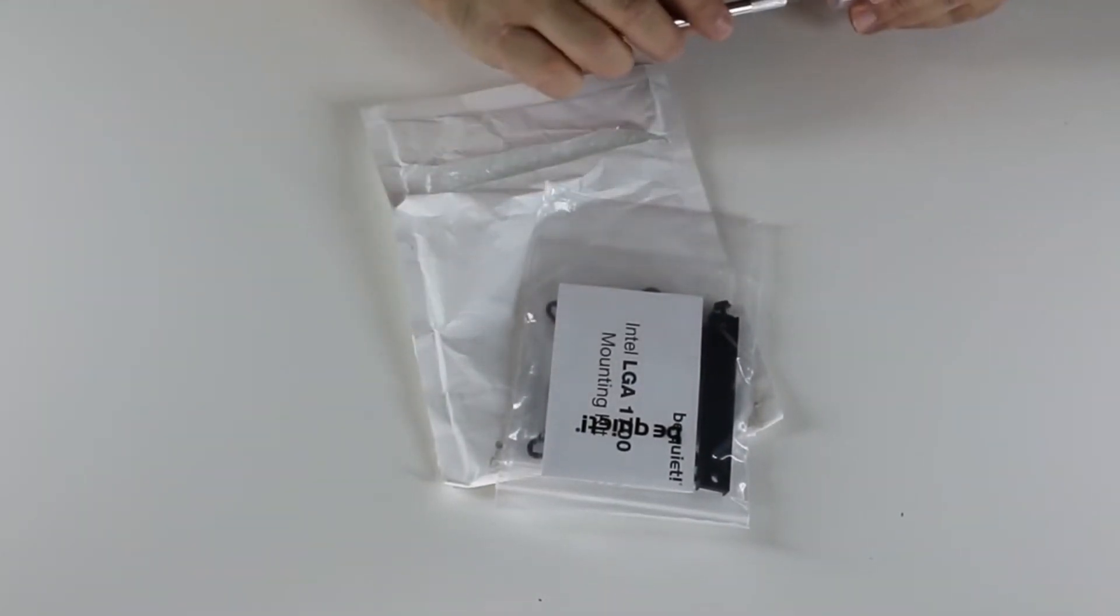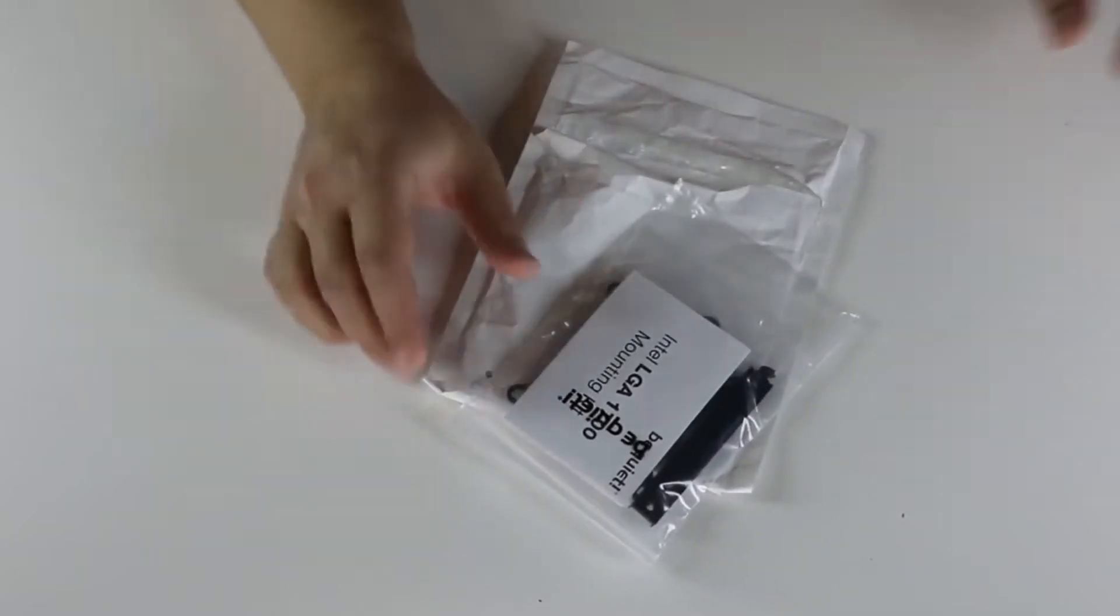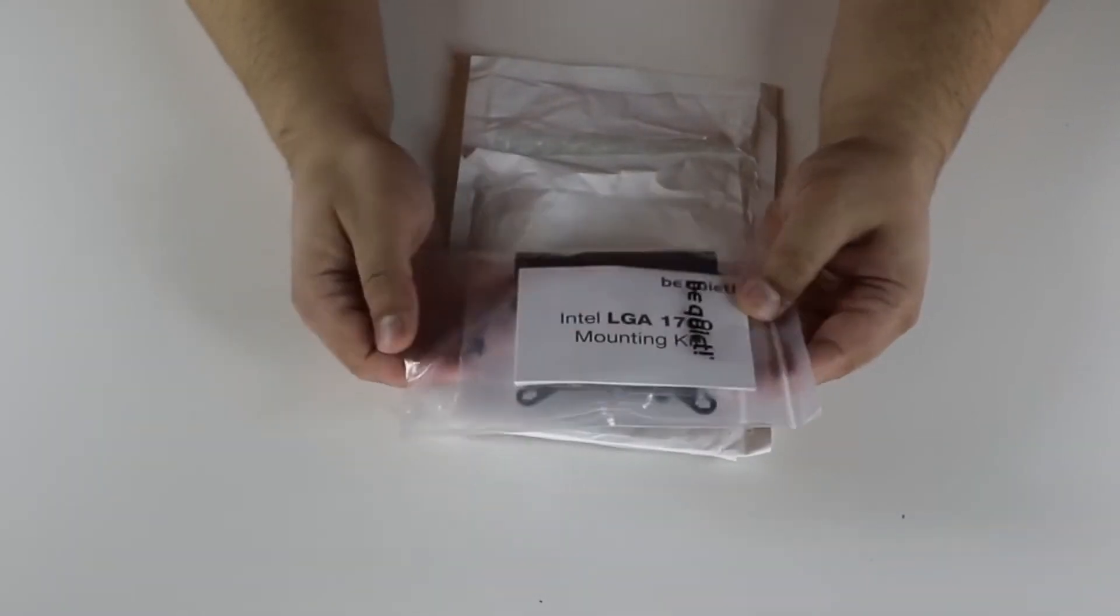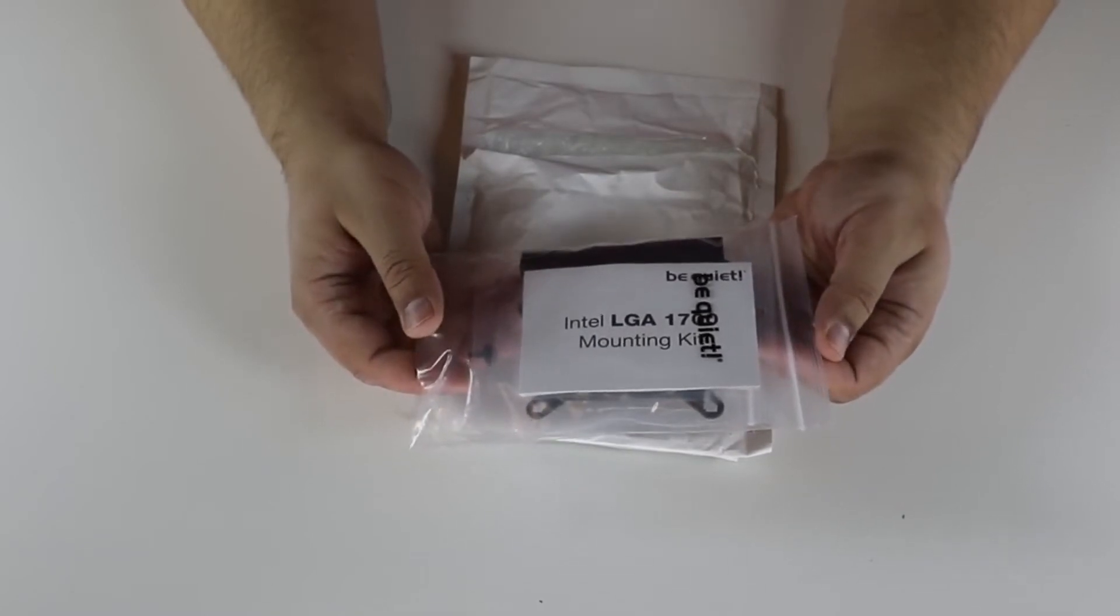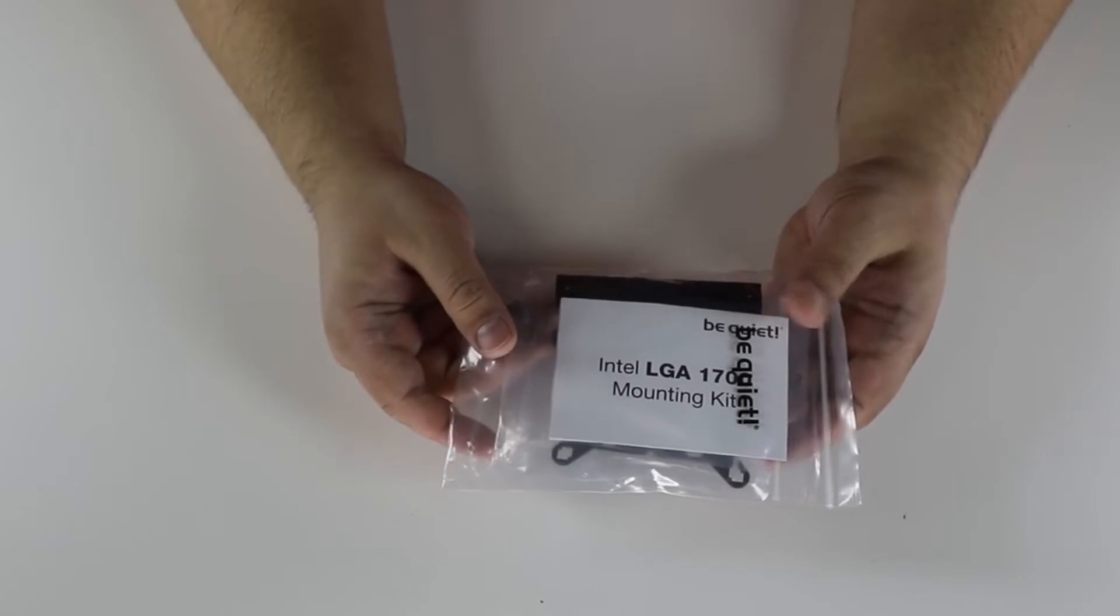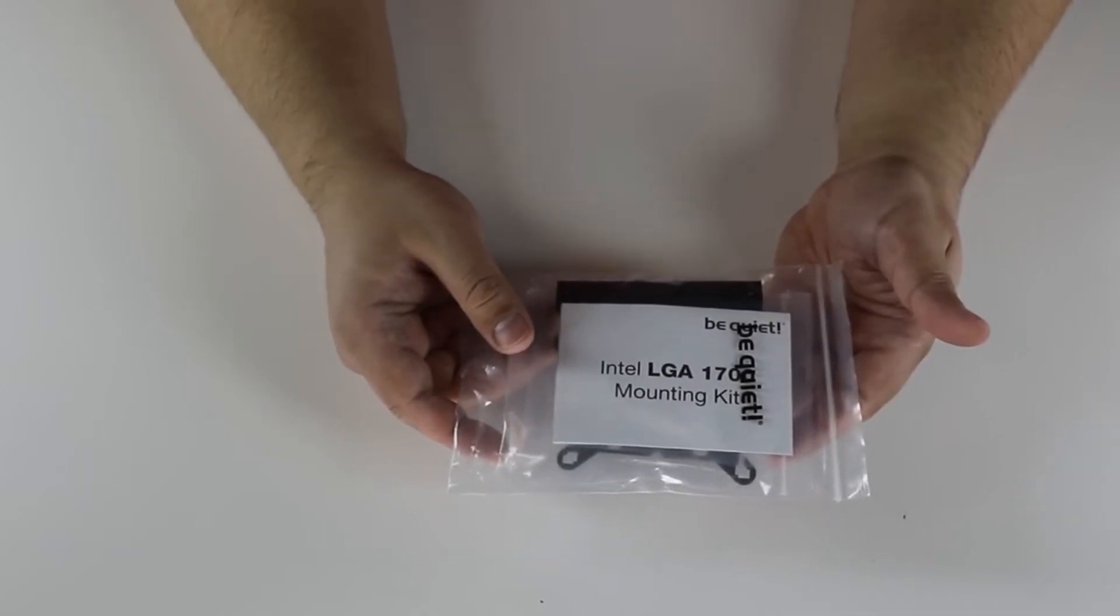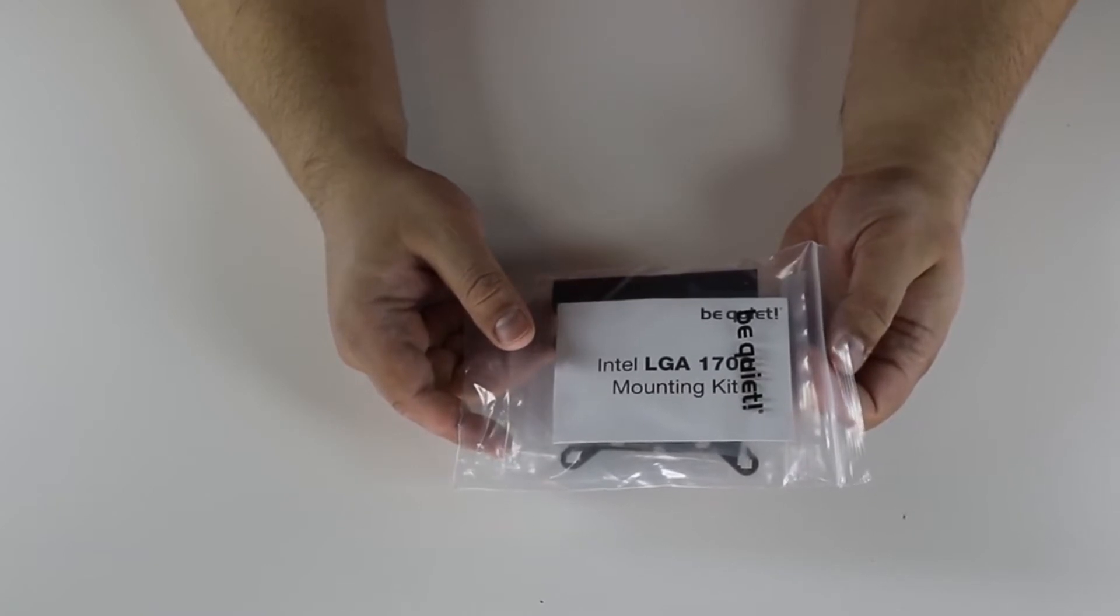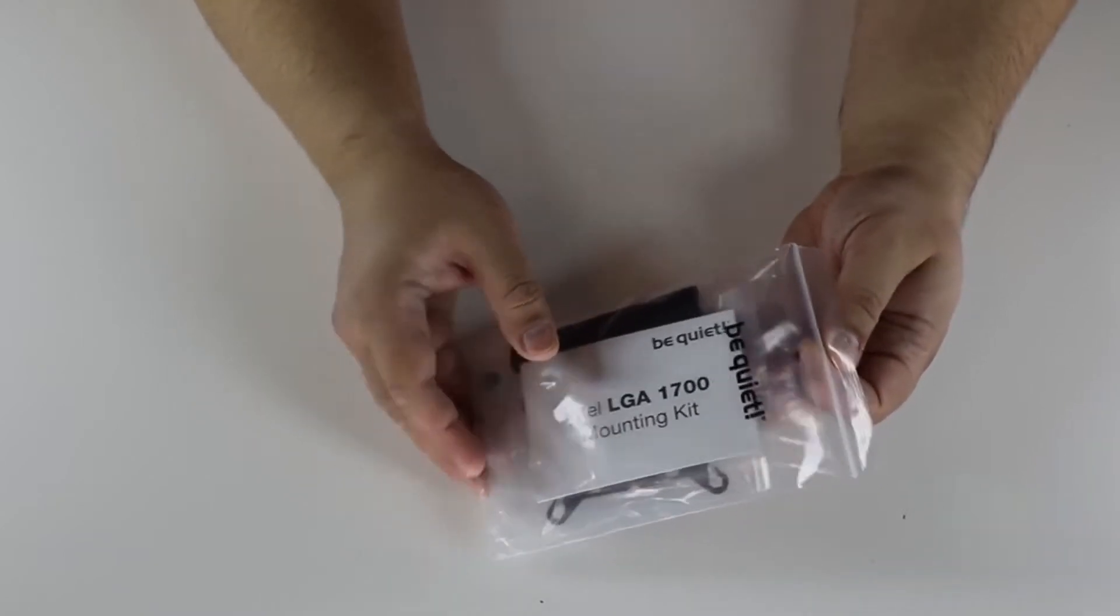An LGA1700 mounting kit from Be Quiet. It's for some of their coolers, or maybe all, I'm not exactly sure. And you can get it for free from the company if you have proof of purchase of one of their coolers and an LGA1700 CPU.